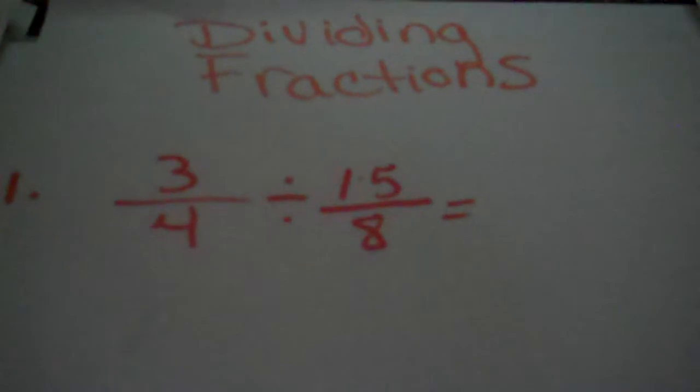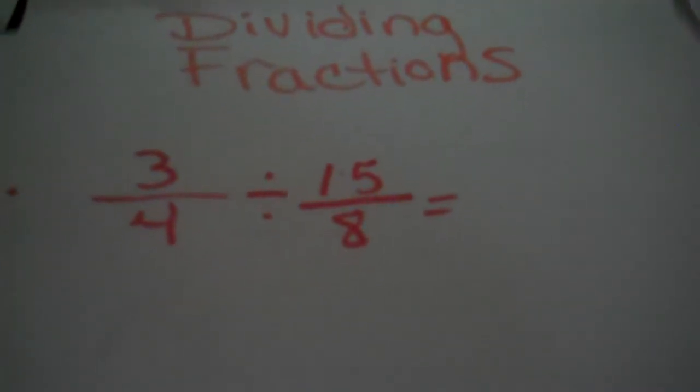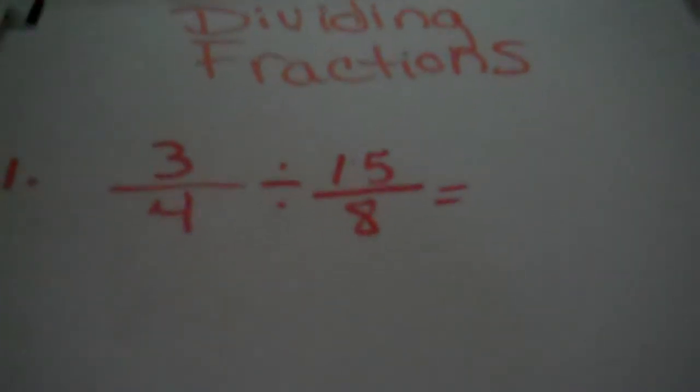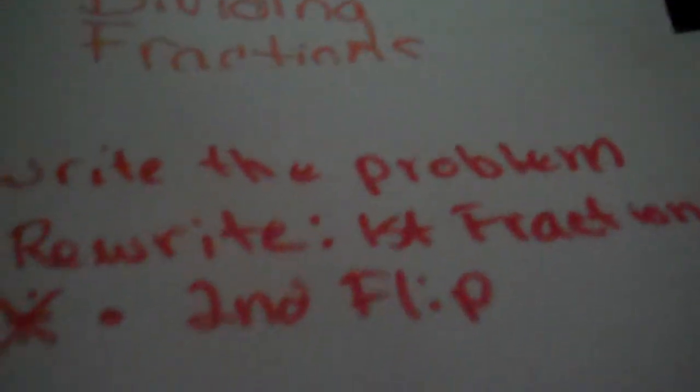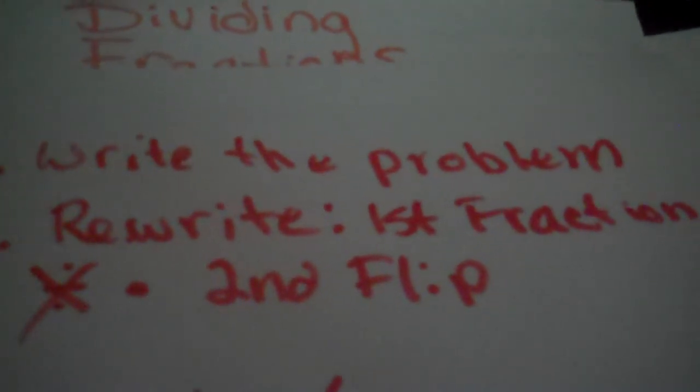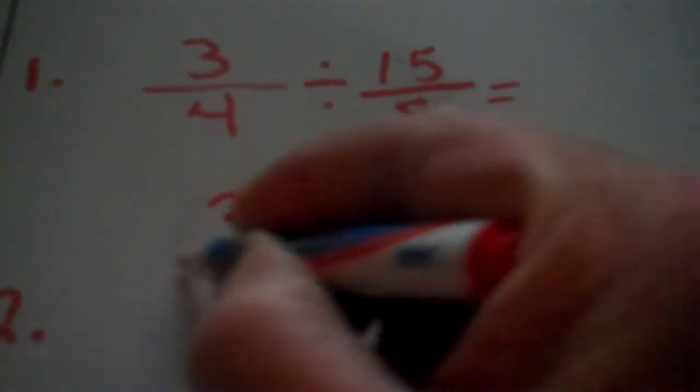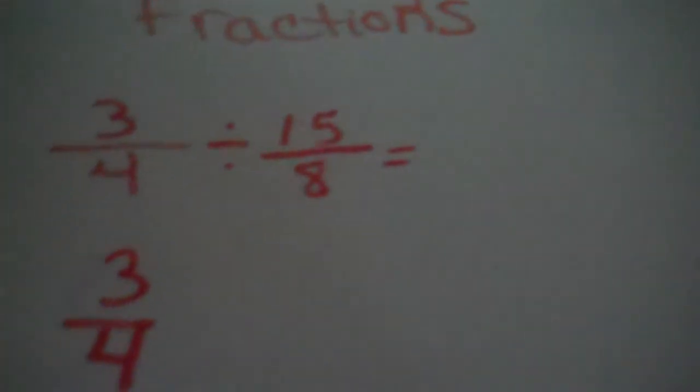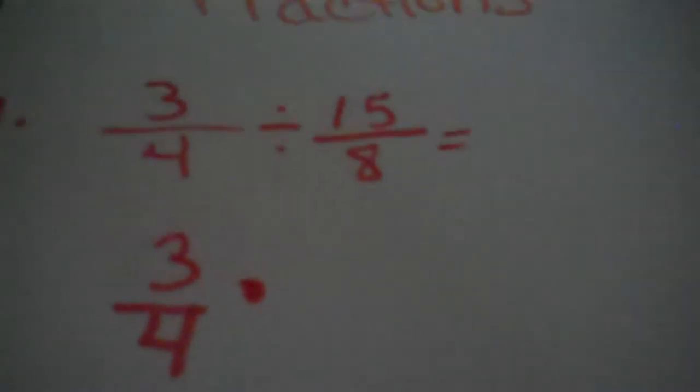Here's the problem we're going to do. So you might want to write this down. Three fourths divided by fifteen over eight. Now, by the first rule, it says rewrite the problem after you've already written the problem. So we're going to rewrite it. This is the second step. So we're going to do three fourths. And the rule says that we need to change the divide to multiply.